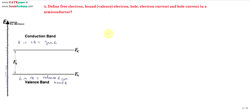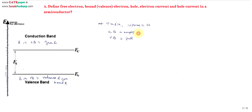Now we will see what is meant by a hole. To understand this concept, we must know that at T = 0 degrees Kelvin, an intrinsic semiconductor has an empty conduction band and a full valence band. All energy levels in the conduction band are empty at T = 0 degree Kelvin.